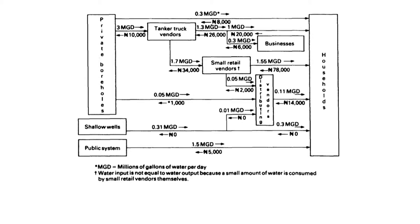On the left-hand side of this diagram are the main water sources that people in Onitsha used: private boreholes, the public water supply system, shallow wells and streams, and rainwater. On the right-hand side are the households. The arrows going from left to right show the amount of water moving along different pathways from the sources to the households, and the arrows pointing from right to left show the amounts of money being paid for this water by purchasers.